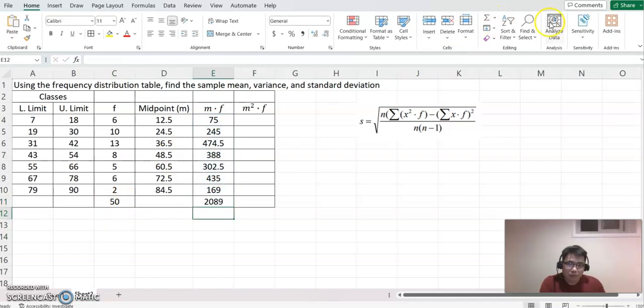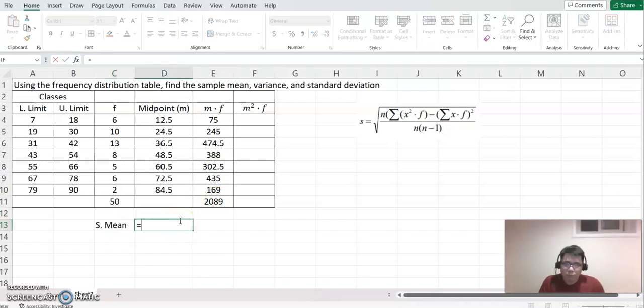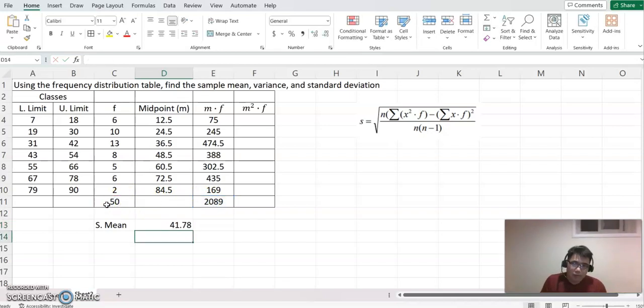Therefore, sample mean equals total value divided by total number of data. So that will be our sample mean value, 41.78. That's part of the answer.